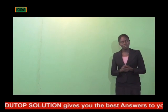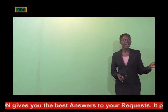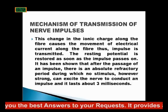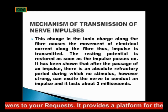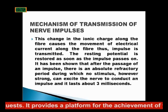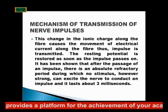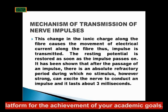When the outside is positive and the inside is negative, that is the resting potential. But when the reverse occurs — the inside becoming positive and the outside becoming negative — we have the action potential. This change in the ionic charge along the fiber causes the movement of electrical currents along the fiber, and thus the impulse is transmitted. The resting potential is restored as soon as the impulse has passed on.